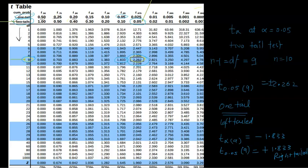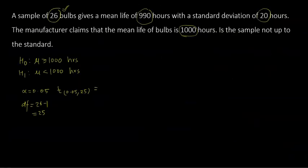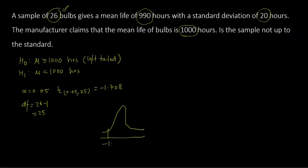I cross-check in the t-table: at 25 degrees of freedom, one-tailed, 5% level of significance, the value is 1.708. Since it is a left-tailed test, the critical value is negative 1.708. The region of rejection is the shaded area to the left of negative 1.708 on the t-curve, with 0 at the center.